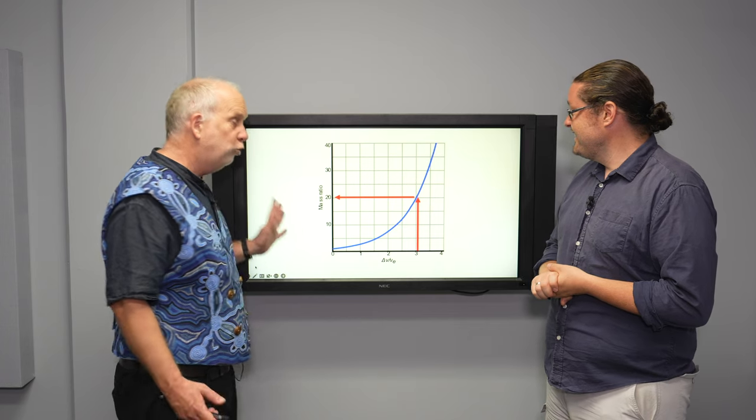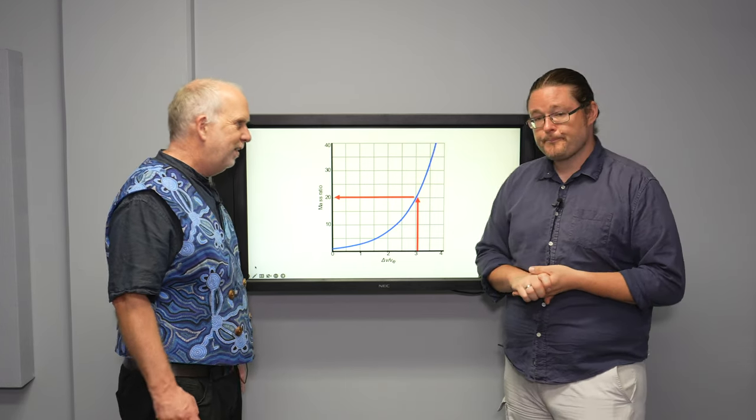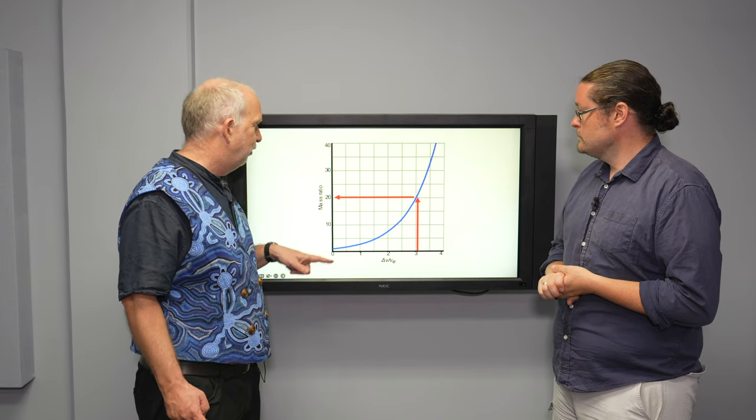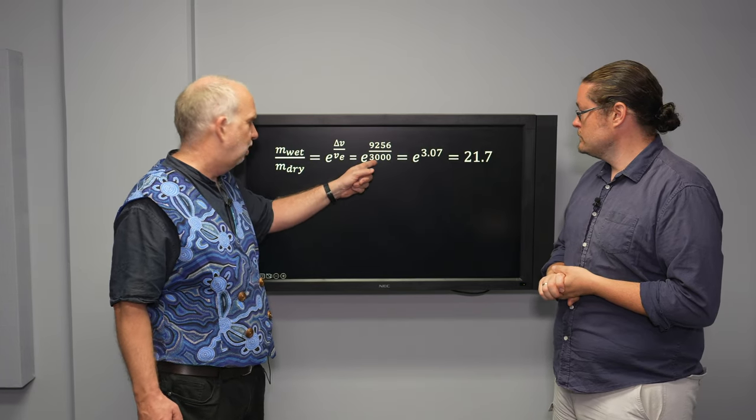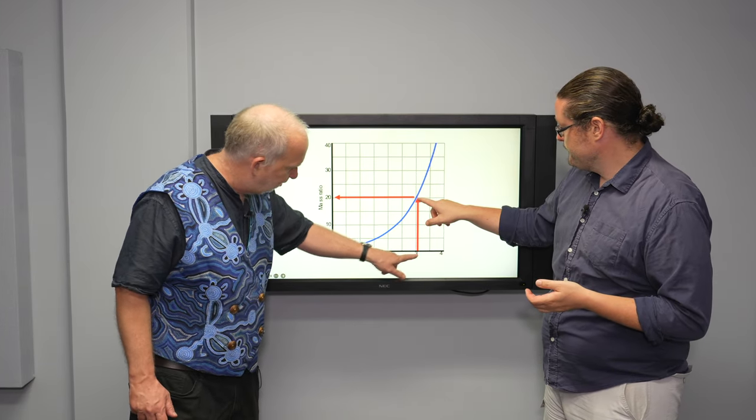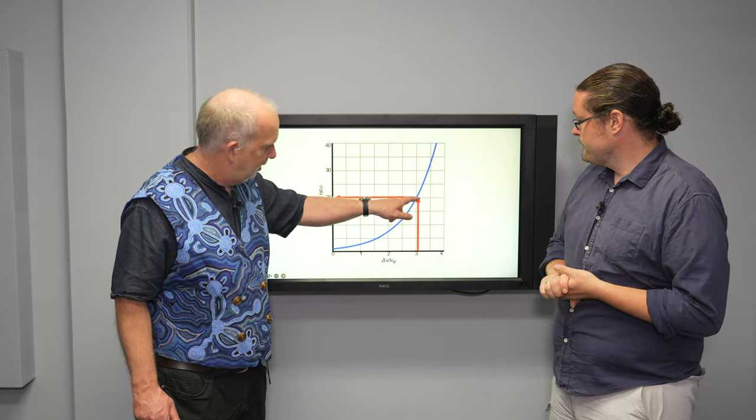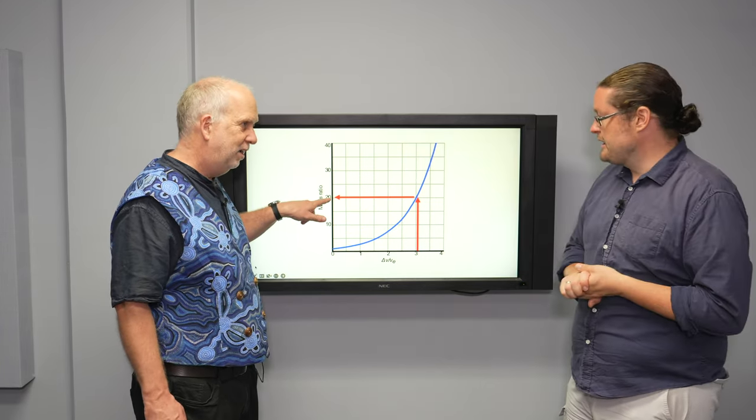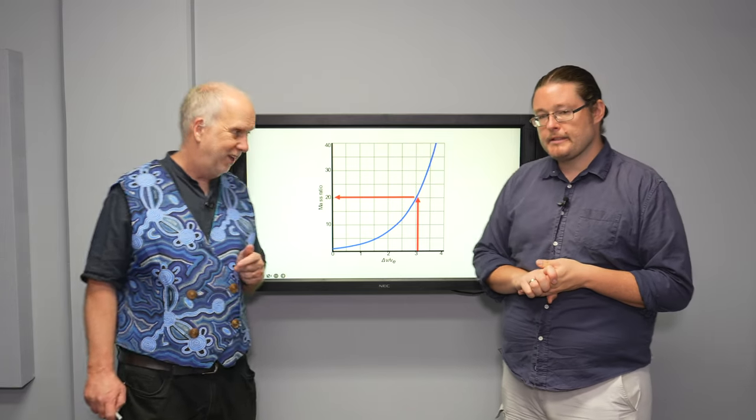You can do this off the graph if you don't want to play with exponentials on your calculator. We see that the ratio of the velocities is 9256 over 3000, about 3. So we can go to the graph. We go along the bottom, we see the velocity ratio is about 3, we go up here to the blue line and then read across, and we see we need a mass ratio about 20, which is what we just said in the previous thing with the calculator.